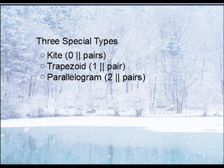One of the key characteristics about the kite is that there are no parallel pairs. Trapezoids have exactly one pair of parallel sides, and a parallelogram has two pairs of parallel sides.